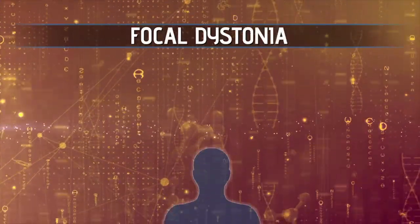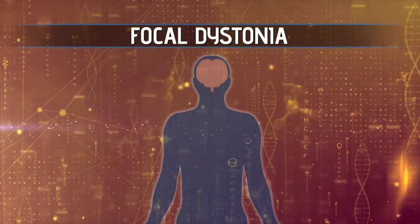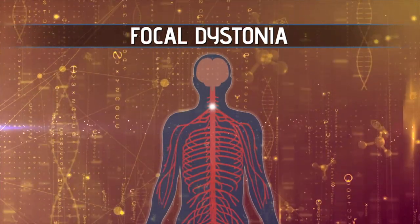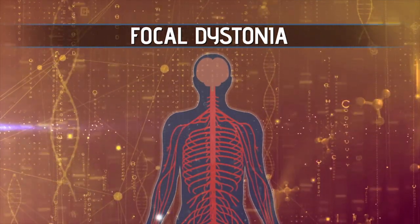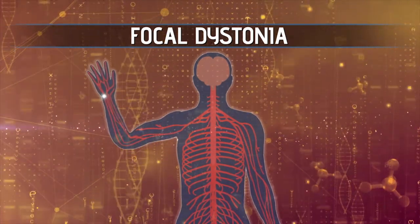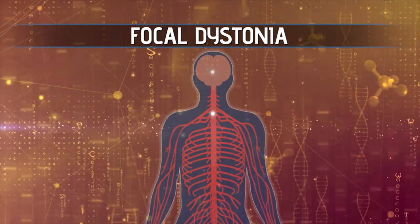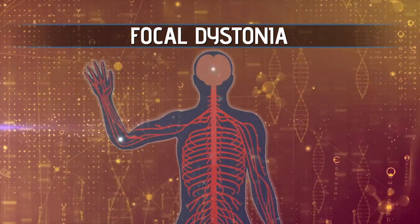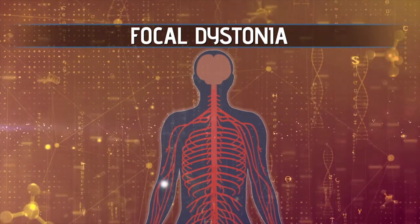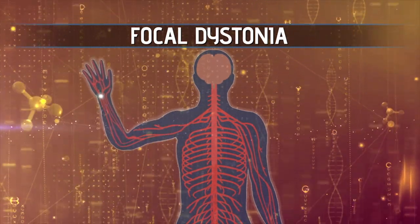Focal dystonia is a problem of the brain and specifically the brain's control of the muscles. When people move, those commands to make movements come from the brain, mediated through the spinal cord. The brain sends signals down to the spinal cord, and the spinal cord sends signals to the muscle to cause the contraction.